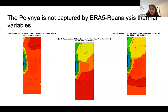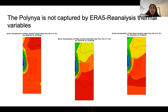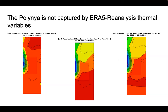Here we have some thermal variables — heat fluxes: mean surface latent heat, mean surface sensible heat, and the net mean surface heat flux. We can see that there aren't necessarily any discernible features that might help us understand what is going on within the polinia. These figures are harder to interpret, but just looking at them superficially, it doesn't seem like we're capturing anything really interesting. This maybe makes us realize that ERA5 data might be able to help us understand the mechanical forcing of polynias, but it doesn't do such a good job when it comes to thermal interactions.